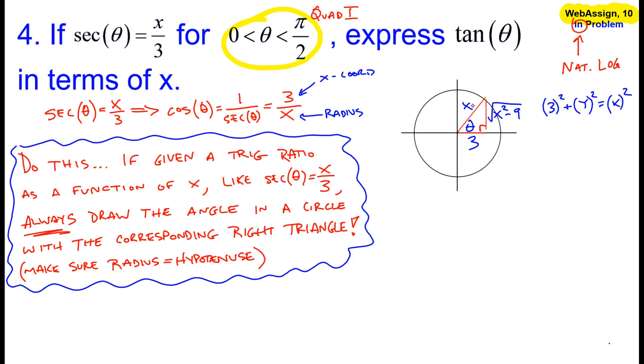In fact, let's go back and answer the original question. The original question was tan theta in terms of x. The tangent of theta equals the opposite leg, which is the square root of x squared minus 9, divided by the adjacent leg, which is 3. So there you go. I've answered this question.